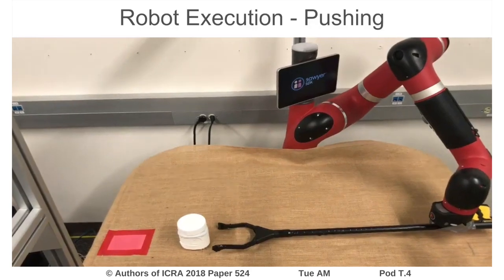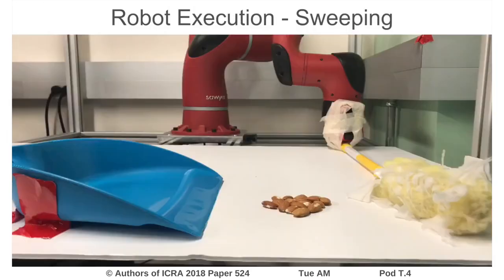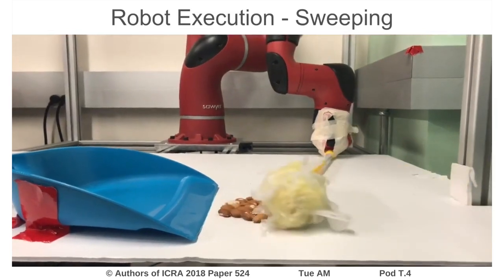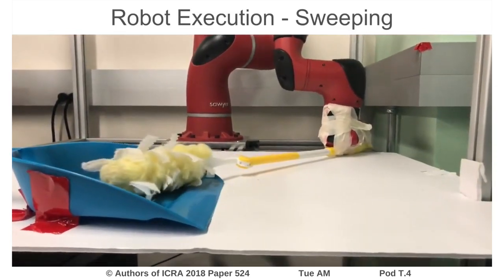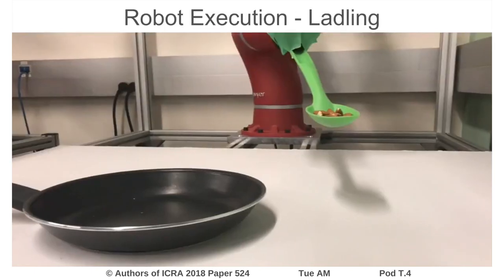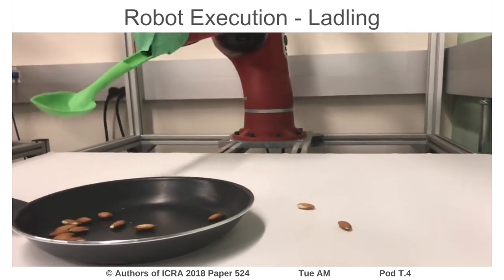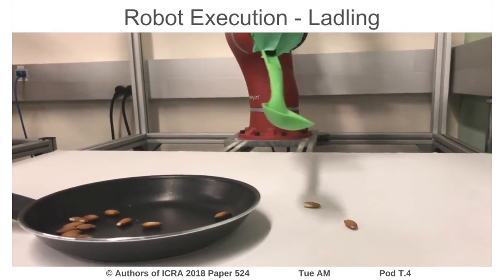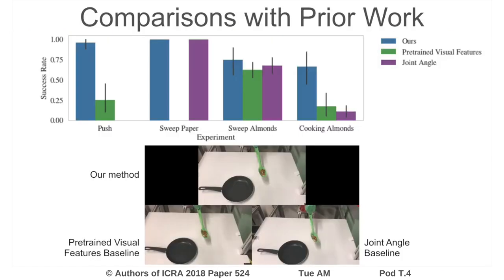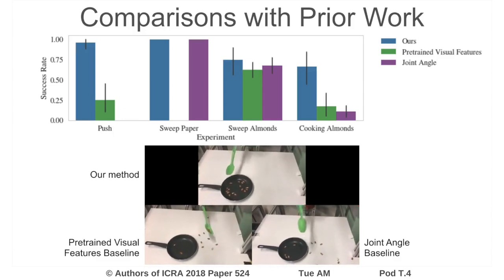Here is the performance of our method on the pushing task, where the robot must push the can onto the red goal. Here is the performance for the sweeping task, where the robot must sweep almonds into a bin, a task infeasible for visual tracking methods. We find that our method is able to deal with this well and perform the task successfully. Here is the performance for the ladling task, where the robot must ladle the almonds into the pan, requiring sequential manipulation and reasoning about granular media. We show that our method is significantly better than a number of prior methods, as seen from the quantitative results as well as the video.